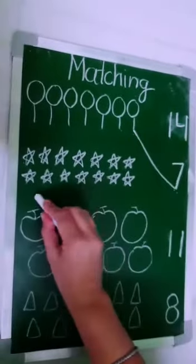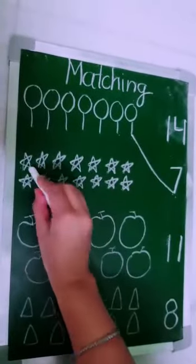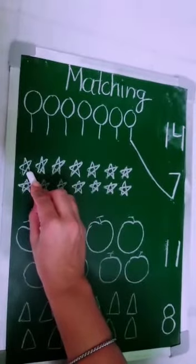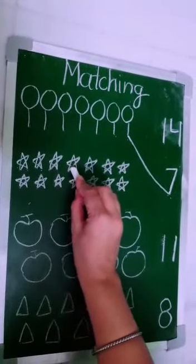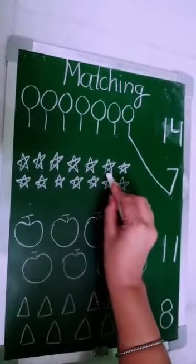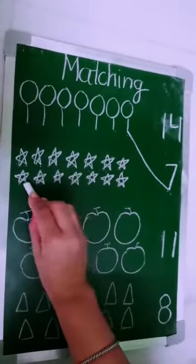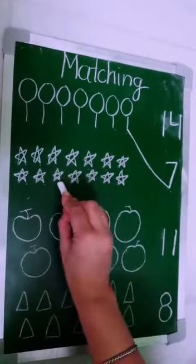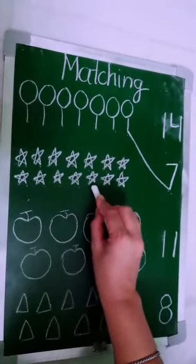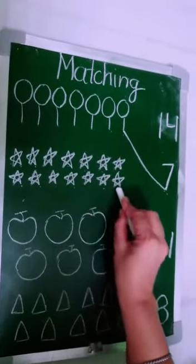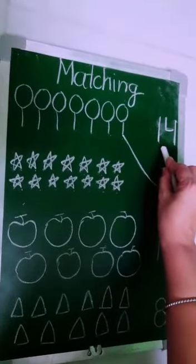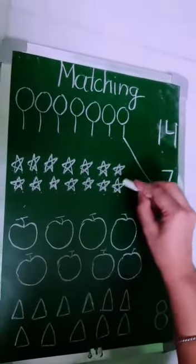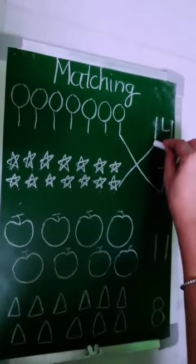Now next, we have stars. Are you ready to count? Let's count. 1, 2, 3, 4, 5, 6, 7, 8, 9, 10, 11, 12, 13, 14. Fourteen stars. So match stars with number 14. Yes, like this.